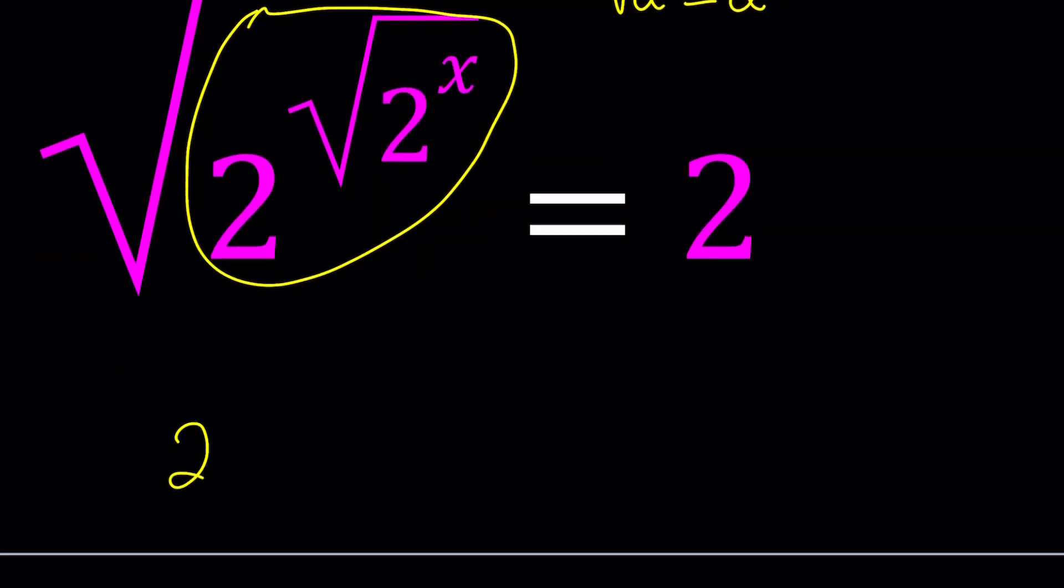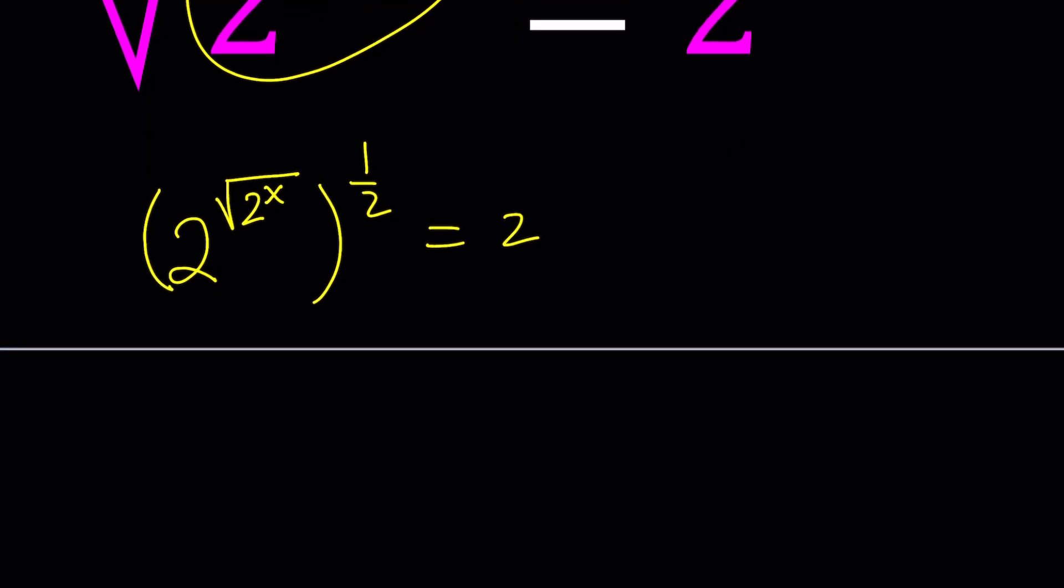So we can take that 2 to the power, square root of 2 to the power x, actually not that equals, this to the power 1 half equals 2. Okay? So I basically replace the square root with power 1 half. And now, what should I do?